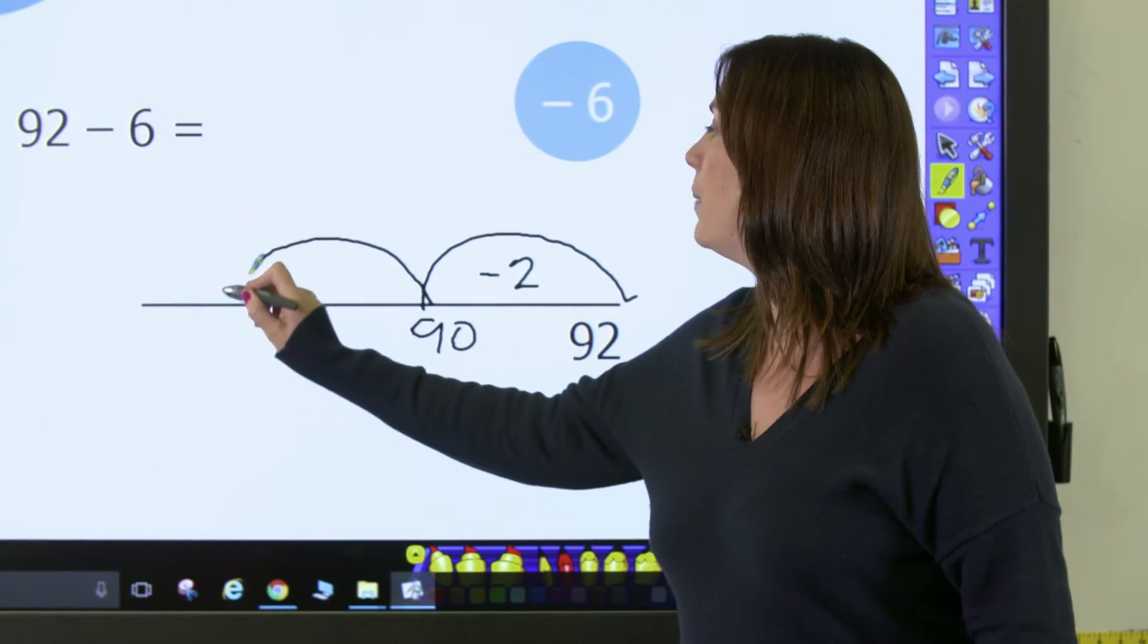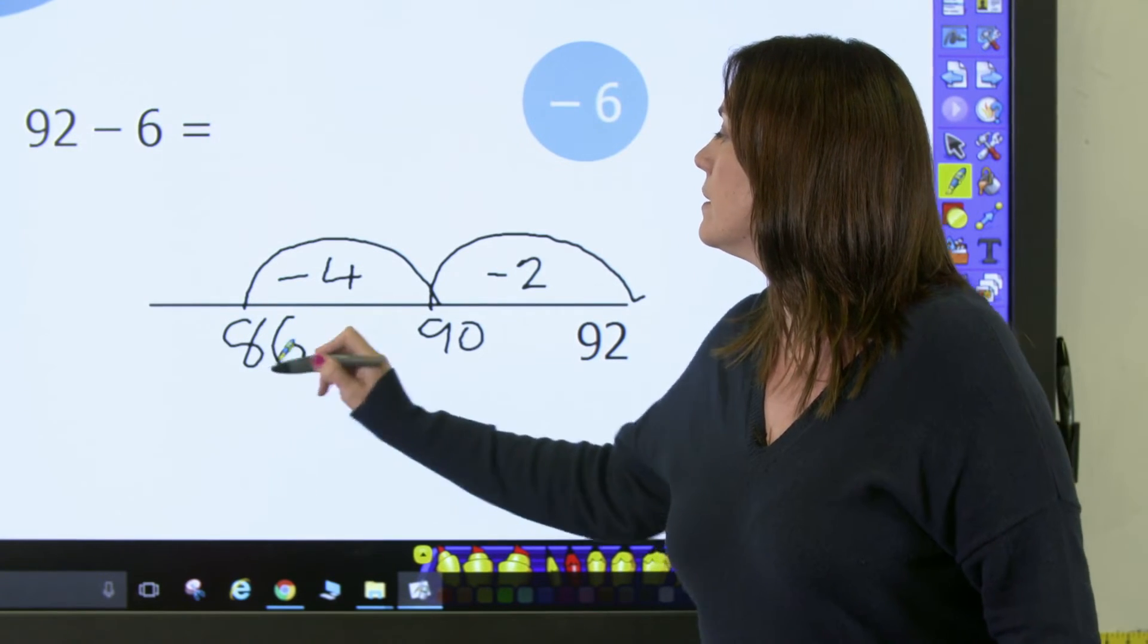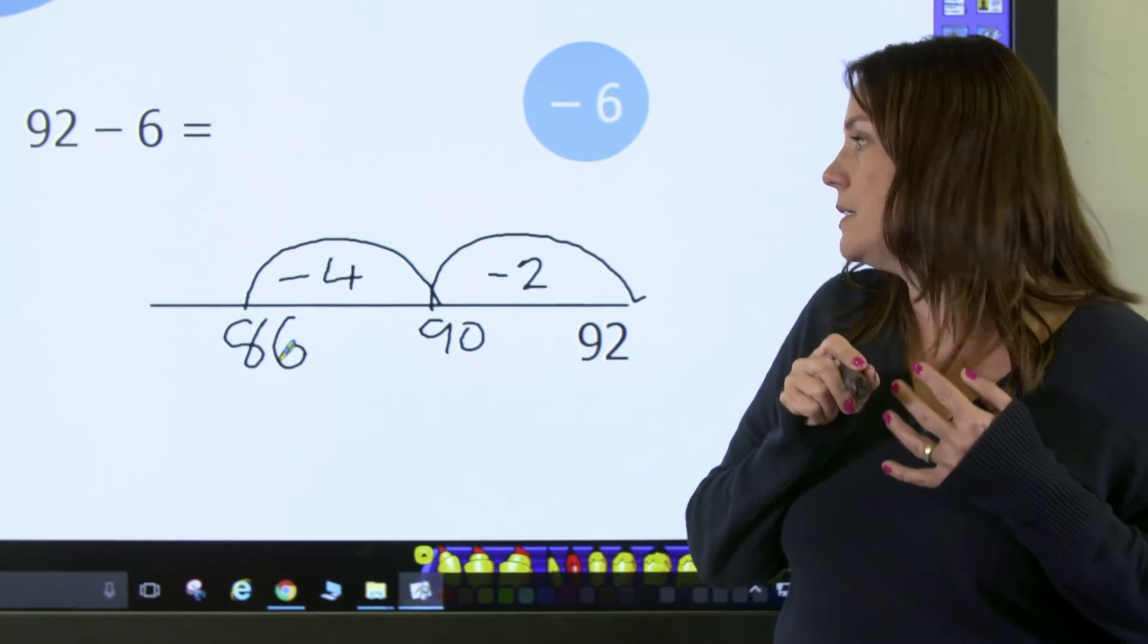So I'm going to do a jump of 4 back, and that will take me to 86. So quickly, I have worked out that 92 take away 6 is 86.